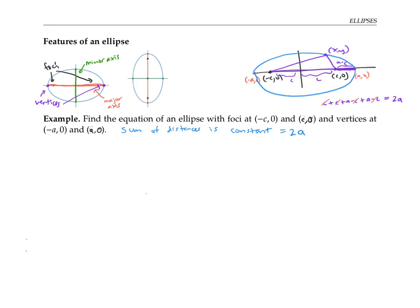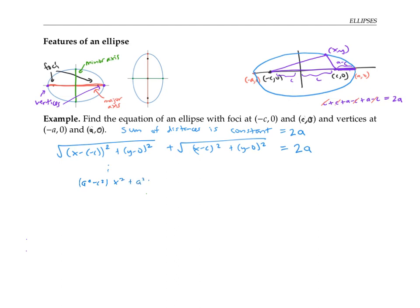Let me write out the distance formulas. The distance from a point (x, y) to the first focus (−c, 0) is the square root of (x + c)² + y². The distance from (x, y) to the second focus (c, 0) is the square root of (x − c)² + y². That sum needs to equal 2a. After a fair amount of algebra, this simplifies to (a² − c²)x² + a²y² = a²(a² − c²). If we let b² = a² − c², we can rewrite this as b²x² + a²y² = a²b², which gives us the standard form: x²/a² + y²/b² = 1.